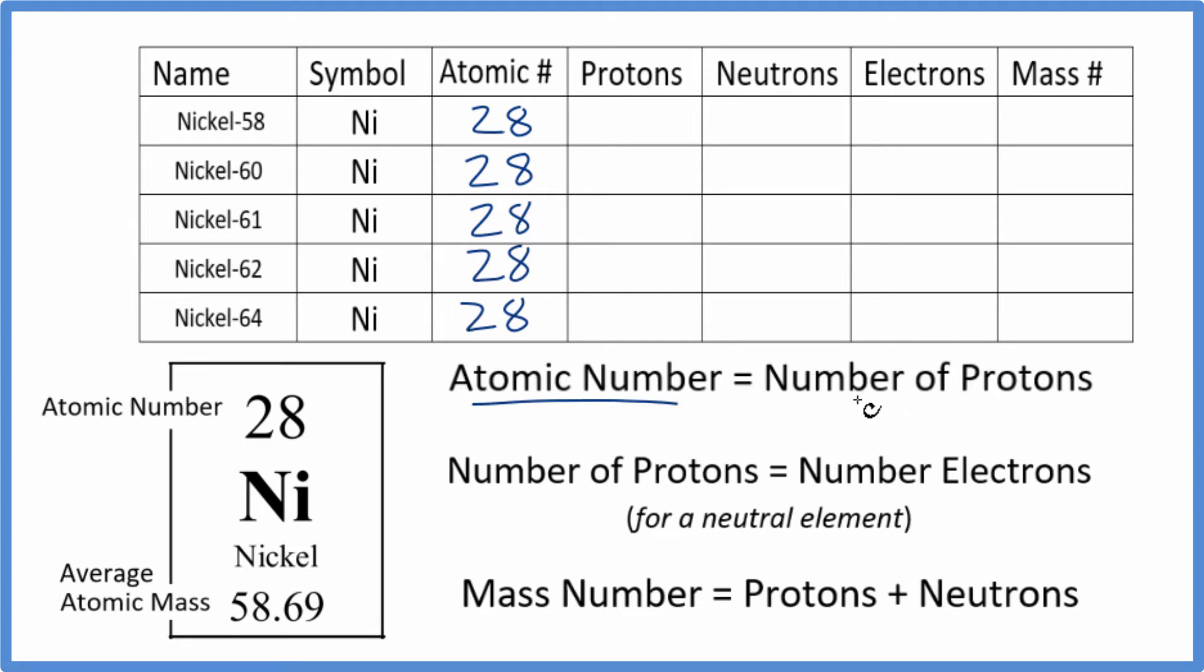The atomic number equals the number of protons. That's its definition. So if the atomic number is 28, we have 28 protons.